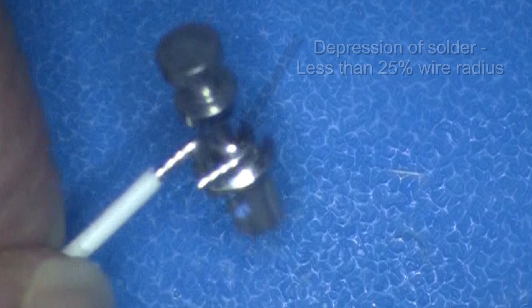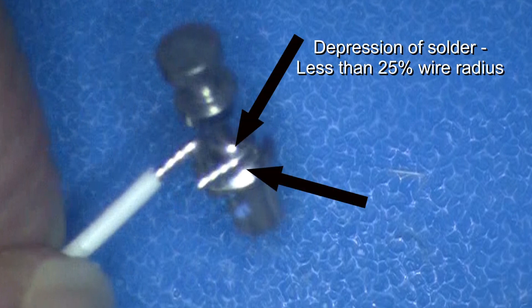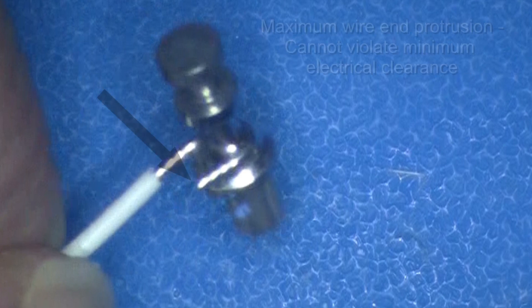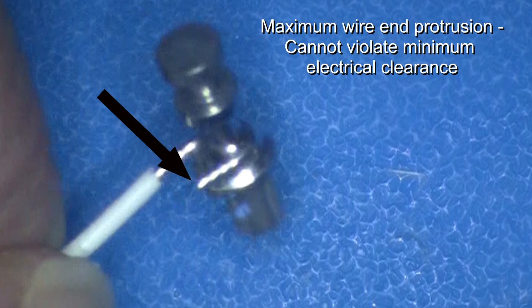Solder should rise between the wire and the terminal and along the terminal base so that any depression between the surfaces is not more than 25% of the radius of the wire. The end of the wire cannot extend beyond the terminal base far enough to cause a potential short to other parts of the assembly.